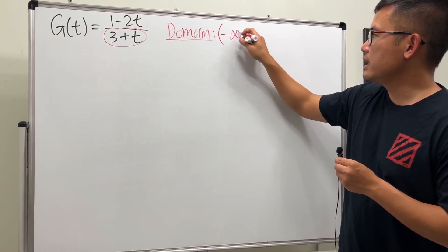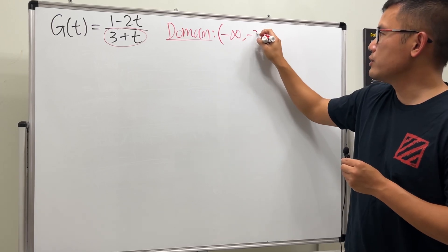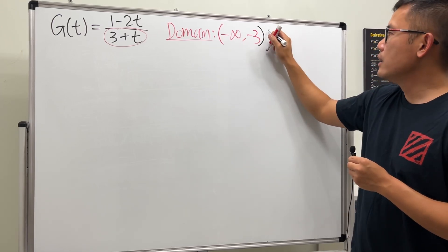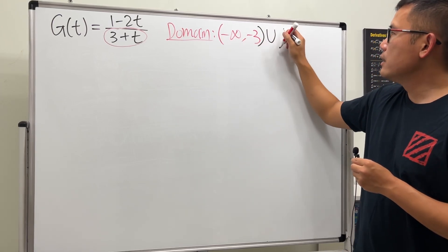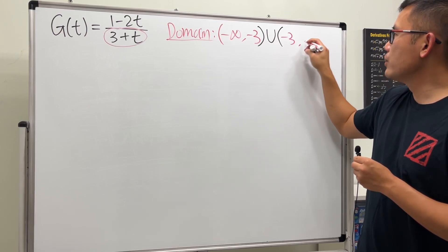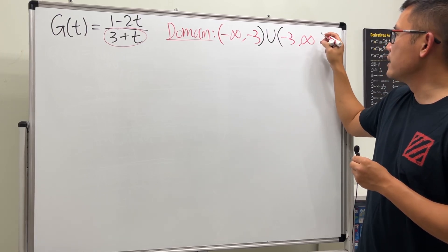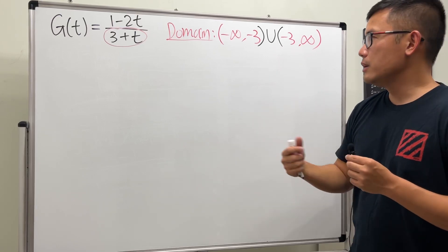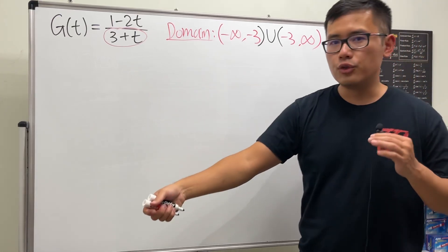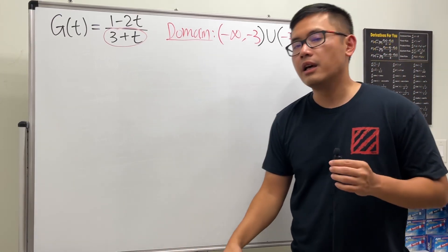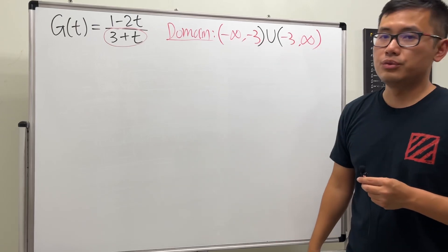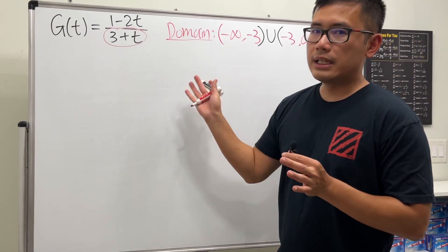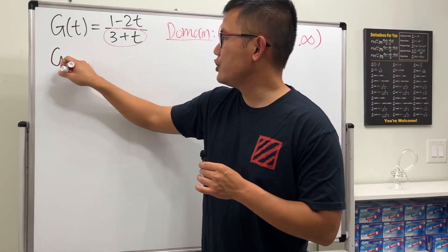In interval notation, the domain is from negative infinity to negative 3 — not including negative 3 — union from negative 3 to positive infinity. This is just a way to say it covers all real numbers except negative 3.